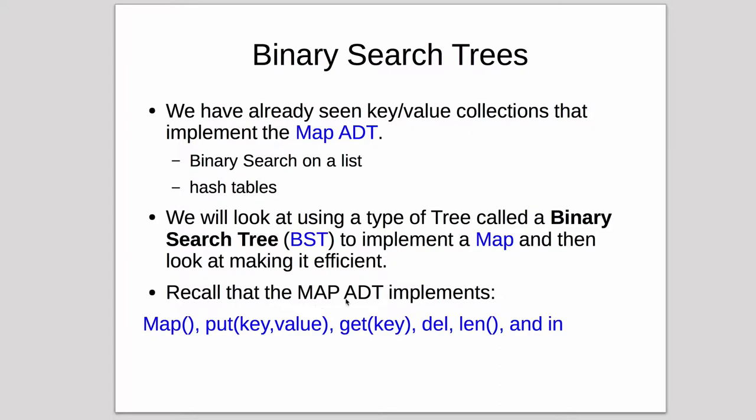Recall that the map abstract data type implements a constructor to create an empty map. It allows you to put a key value, get a key which will return the value, delete a key, find out how many items are in the map with the length operator, and check with the in operator if a certain key is in the map.